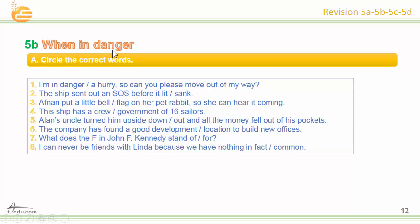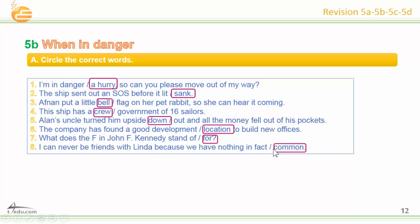5B: When in danger. Circle the correct words. Number one: hurry. Number two: sank. Number three: bill. Number four: crew. Number five: down. Number six: location. Number seven: four. Number eight: common.